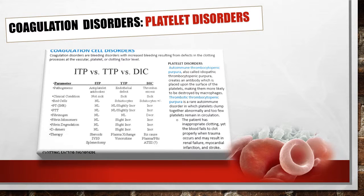Let's do a quick overview of coagulation disorders. These are bleeding disorders with increased bleeding resulting from defects in the clotting process at the vascular, platelet, or clotting factor level. Autoimmune thrombocytopenic purpura, also called idiopathic thrombocytopenic purpura or ITP, creates an antibody placed on the surface of platelets making them more likely to be destroyed by macrophages. Thrombotic thrombocytopenic purpura or TTP is a rare autoimmune disorder in which platelets clump together abnormally, too few platelets remain in circulation, and the patient has inappropriate clotting yet blood fails to clot properly when trauma occurs, potentially resulting in renal failure, MI, and stroke. A comparison chart shows the parameters for ITP, TTP, and DIC.